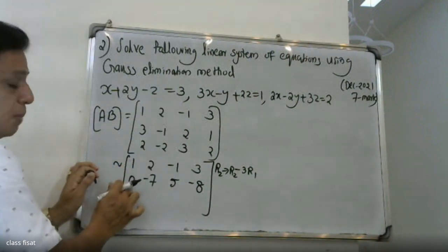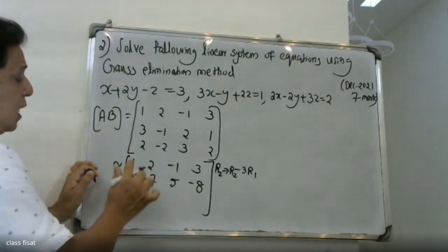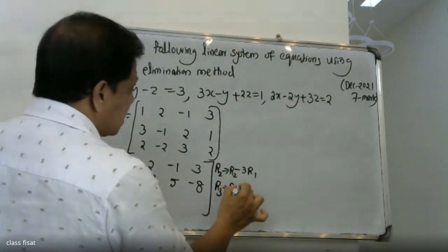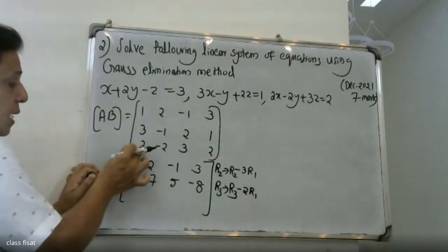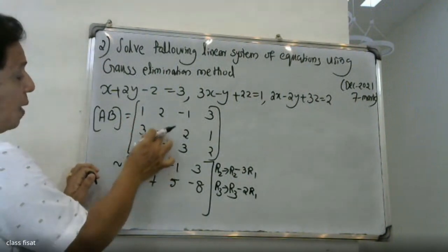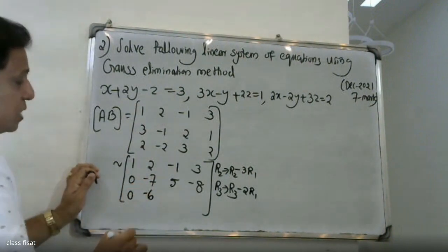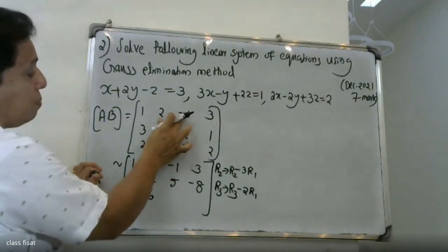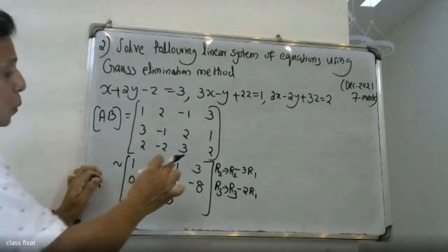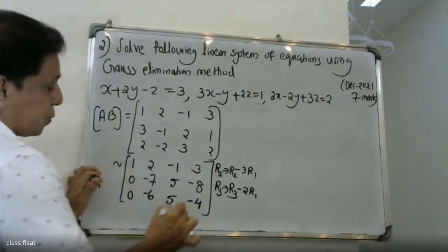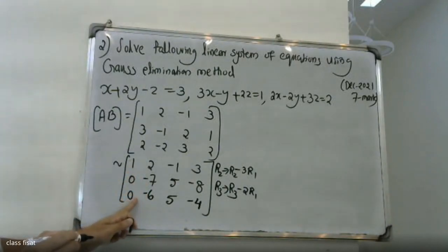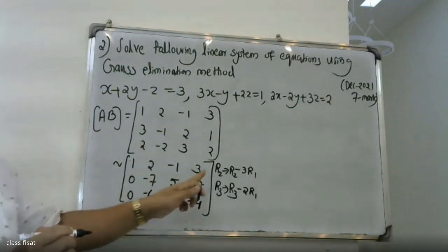R3 changes to R3 minus 2R1. The first row remains R1. For R3: 2 minus 2 times 1 gives 0. Then minus 2 minus 2 times 2 gives minus 6. Then 3 minus 2 times minus 1 gives 3 plus 2, which is 5. And 2 minus 2 times 3 gives 2 minus 6, which is minus 4. So R3 becomes 0, minus 6, 5, minus 4.